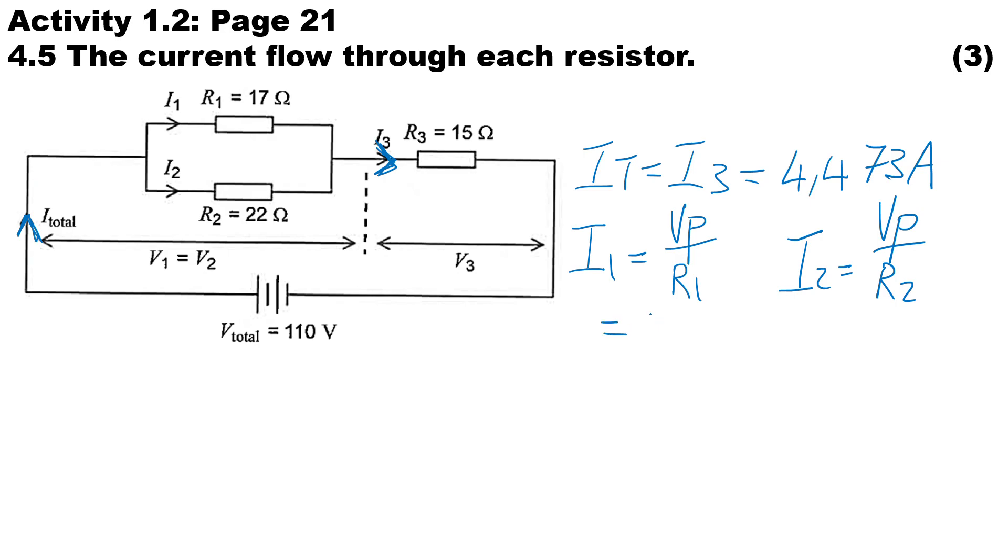...of 42.896 over R1, which is 17 ohms, and we use the same voltage for I2 because they're in parallel, so that's 42.896 divided by the resistance of R2, which is 22 ohms. And then we'll get our current through each branch. So I1 works out to 2.523 amps, and I2 works out to 1.95 amps. Now I1 plus I2 should be equal to the total current.